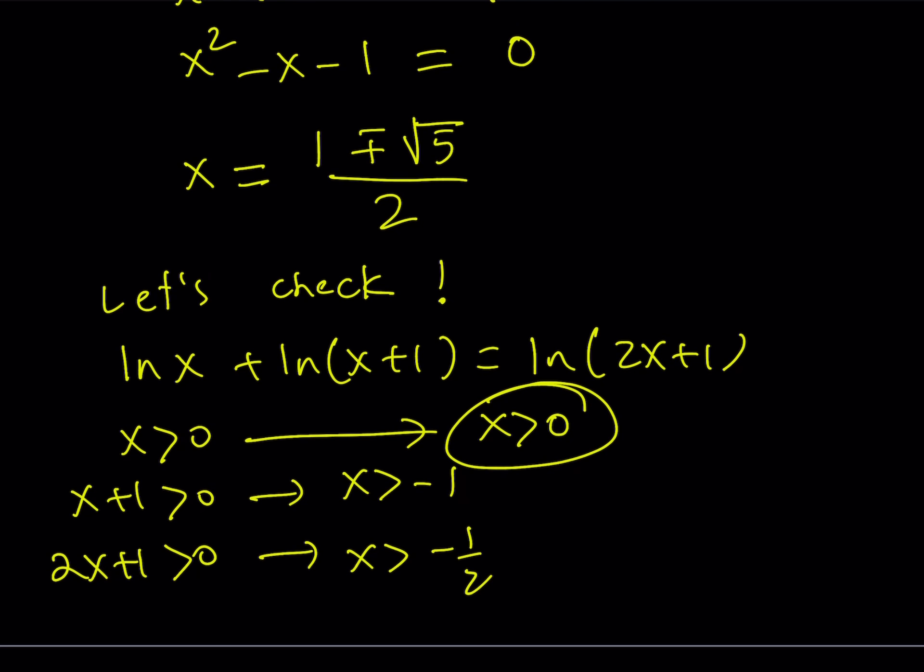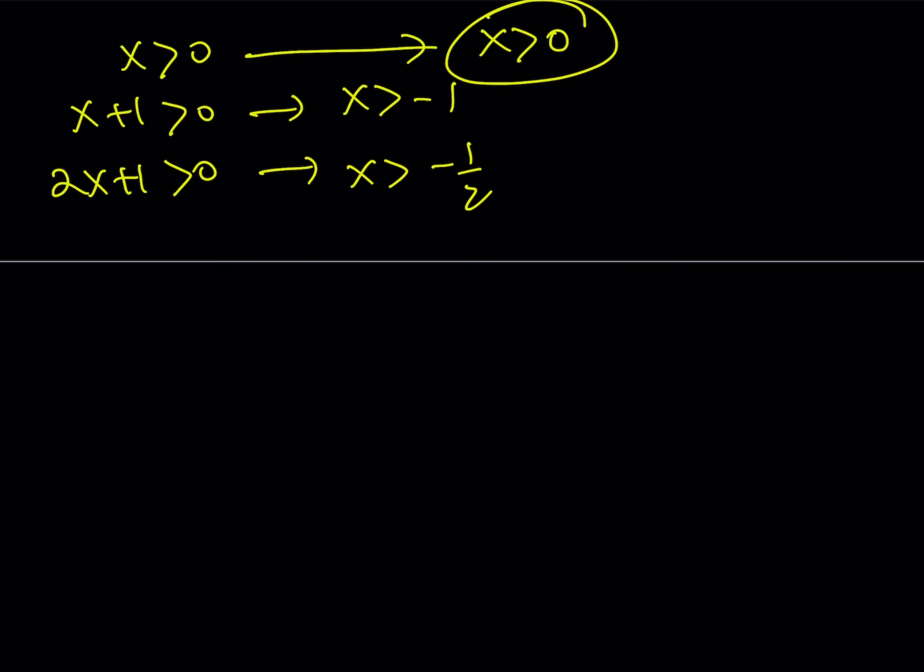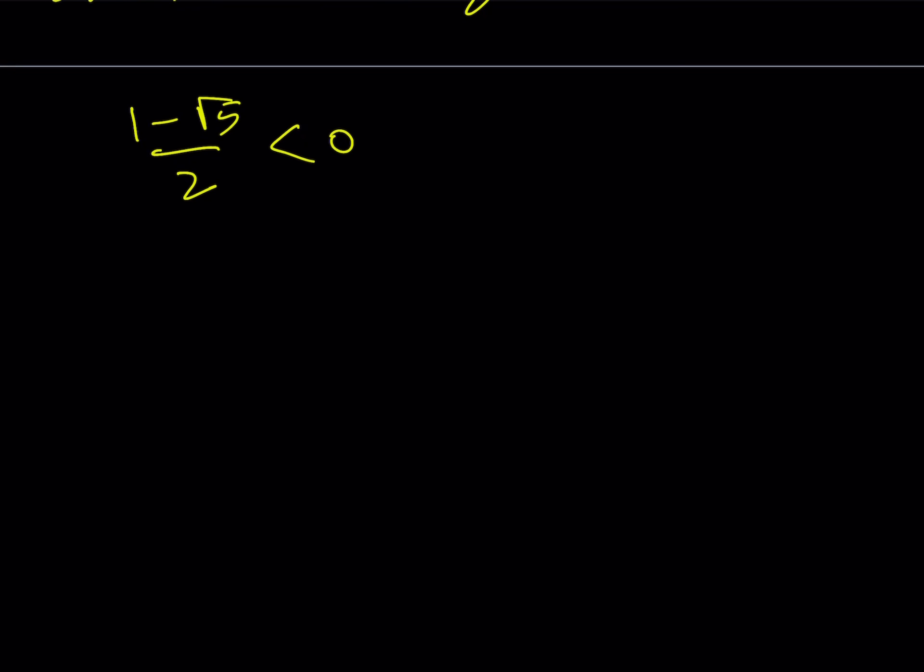However, 1 minus root 5 over 2 is not positive, right? So 1 minus root 5 over 2, because root 5 is greater than 1, because 5 is greater than 1. This is negative. So you don't want that. So we end up with a single solution. But don't just underestimate the power of the single solution, because it is a very, very powerful solution.